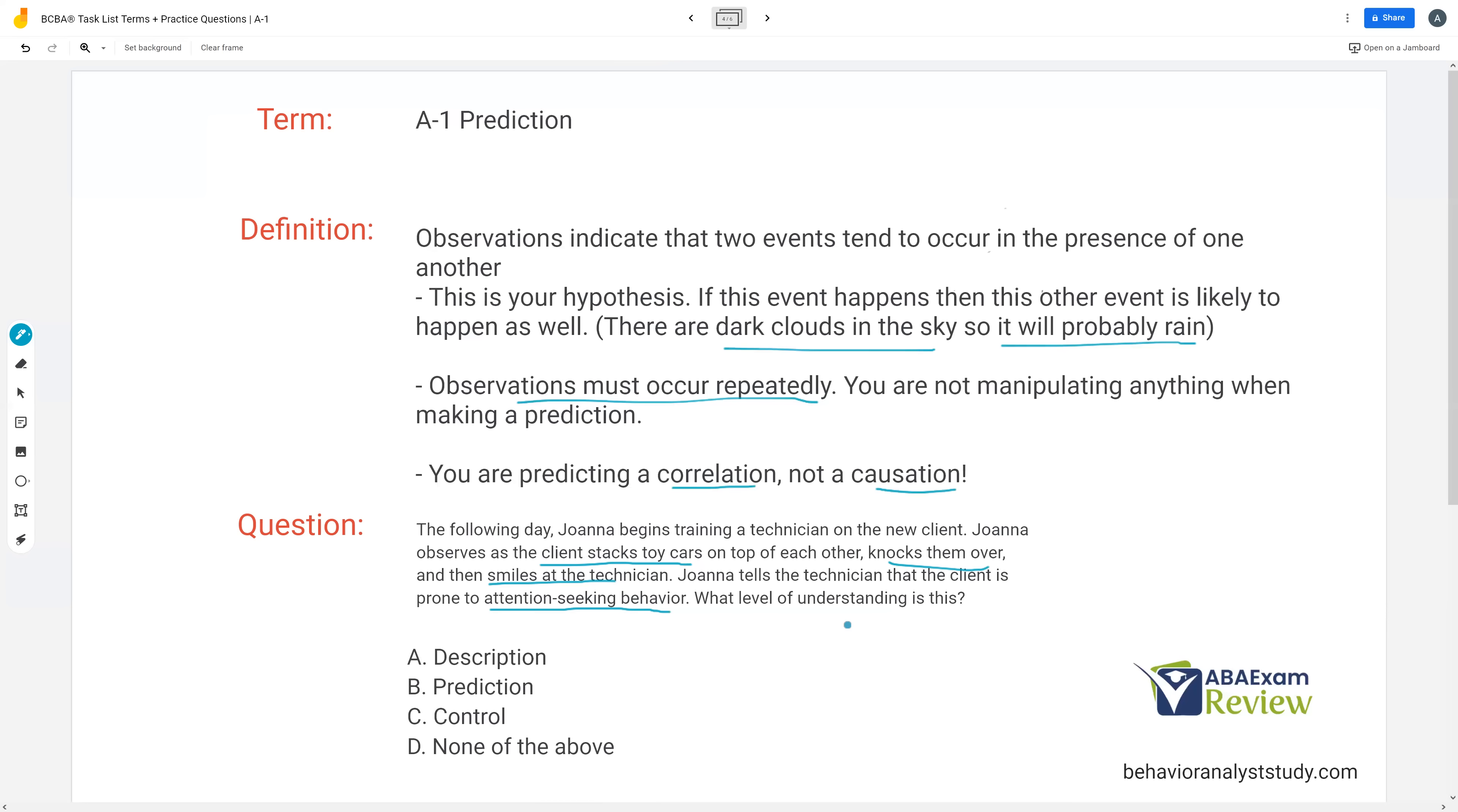Don't make a prediction stronger than it actually is. So what level of understanding is this? A, description. What's one level above description? Because Joanna's actually made a hypothesis. So what Joanna has done is predicted what she believes is occurring. Now, it's not quite yet control. We're about to talk about control.